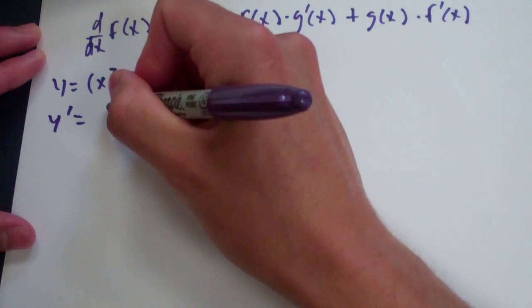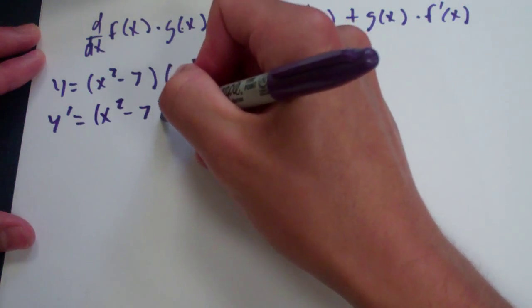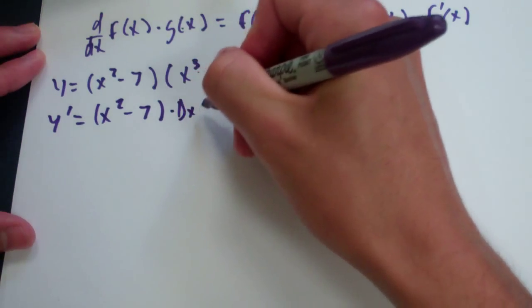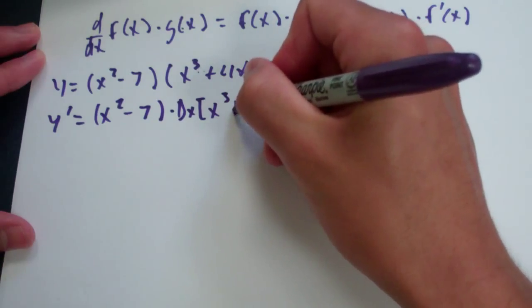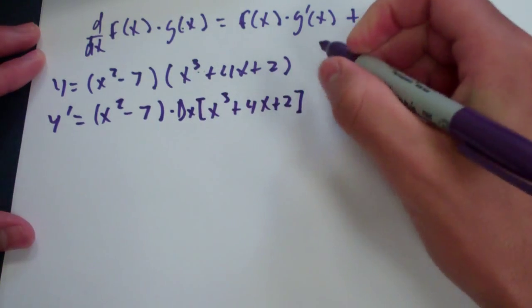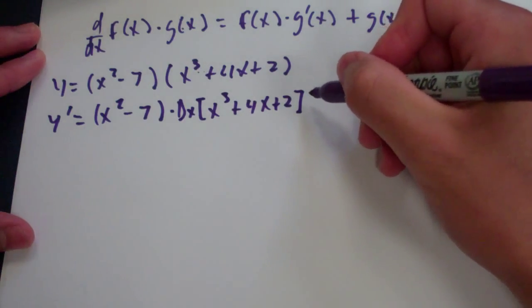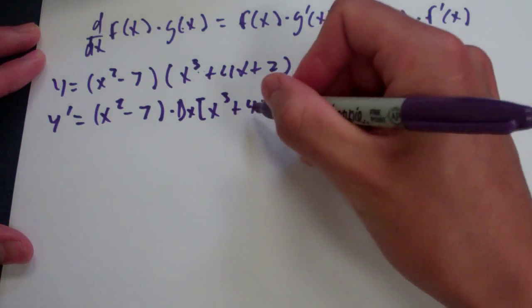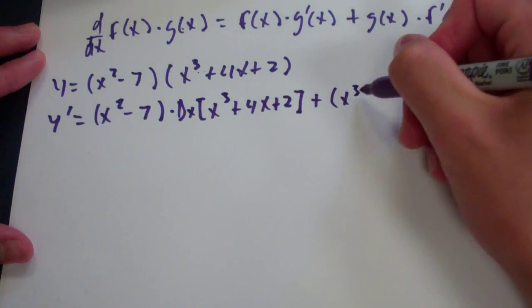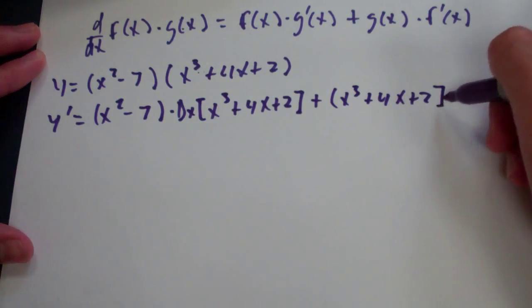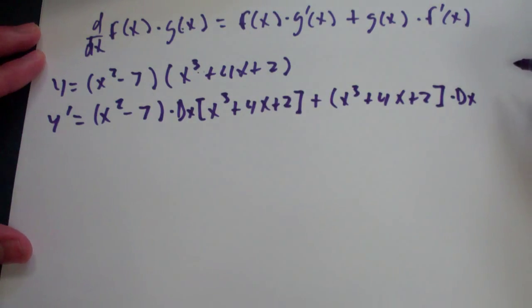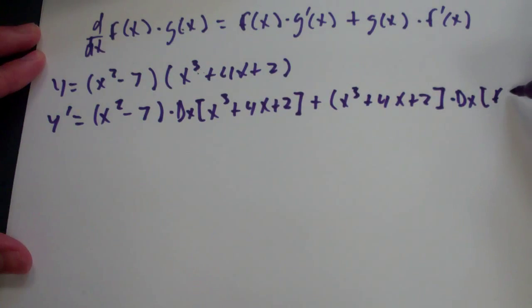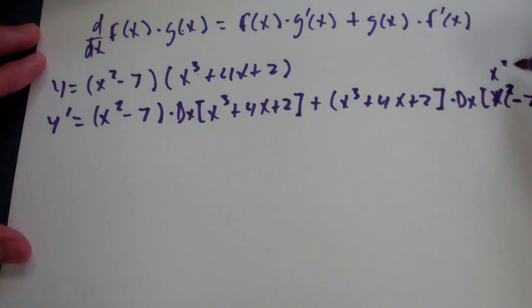We're going to take the derivative of the second function, and I'm just going to write it out this way so it makes sense. And then we have plus this function times the derivative of the first function, which is just f(x). Oops, excuse me. Which is just x squared minus 7. That looks bad, but don't worry. It's not. This is actually x squared minus 7.